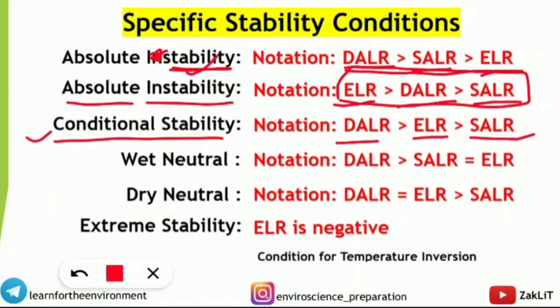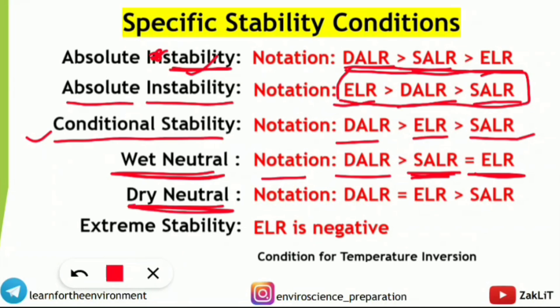For the wet neutral condition — a question was asked two years ago — when DALR is greater than SALR and SALR is equal to ELR, that is the wet neutral condition. For the dry neutral condition, DALR equals ELR and ELR is greater than SALR. So in dry neutral: DALR = ELR > SALR.